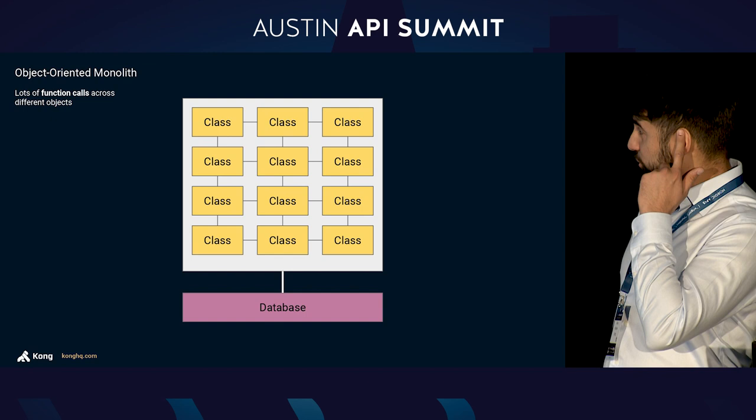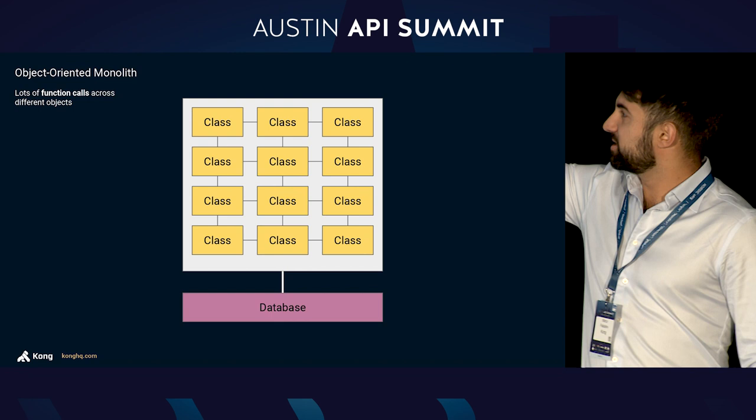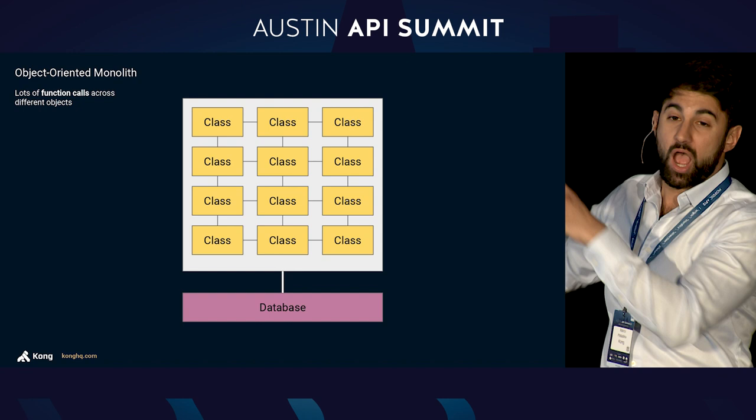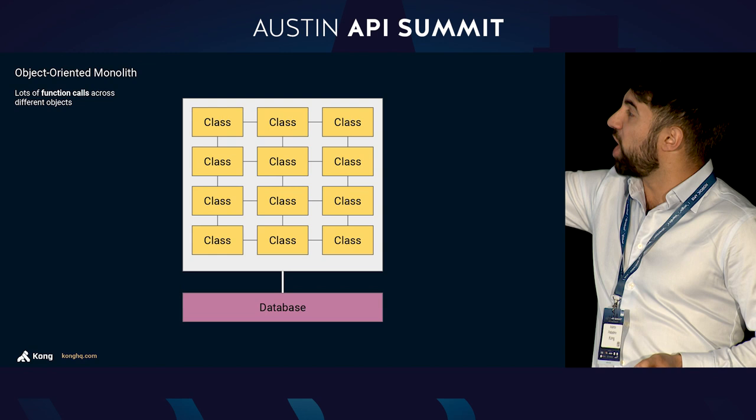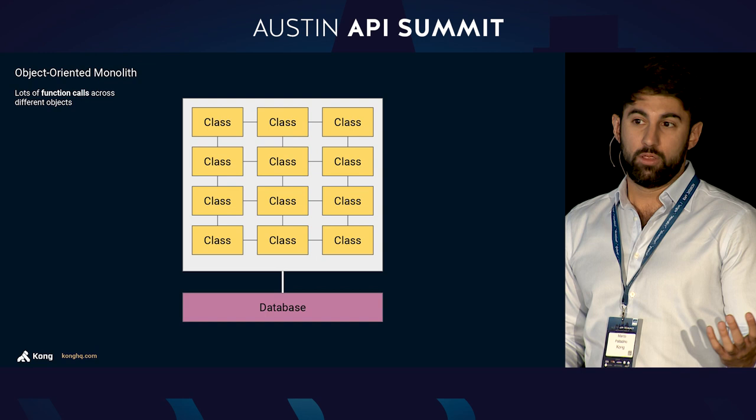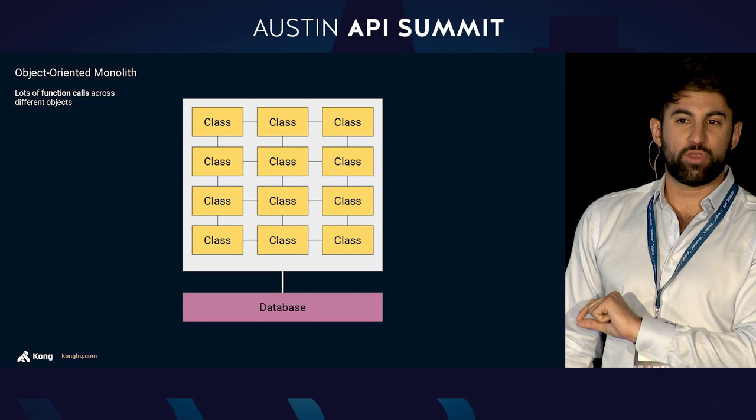Let's look at the monolith — this is the starting point. In an object-oriented monolith, we have one large codebase with lots of different objects created from our classes, and these objects communicate to each other via function calls. The function call is always going to work — we leverage whatever system we're using, like the Java Virtual Machine, to make sure the function call is actually received by the target class. Most likely we have one database, and the monolith accesses the database — every class and object of the monolith can access it.